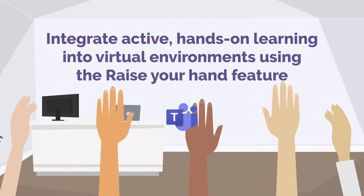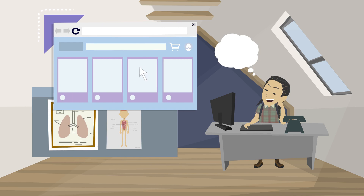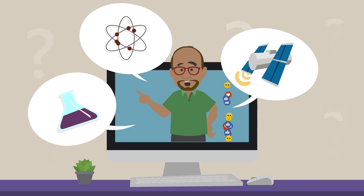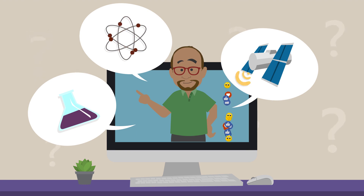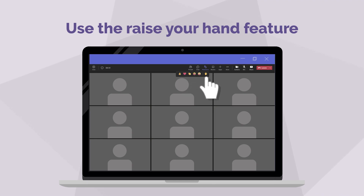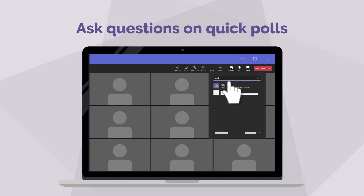Integrate active, hands-on learning into virtual environments using the raise your hand feature. Remember that students can hold up their work to the camera. Teachers should use engagement strategies like asking students to give a thumbs up or thumbs down sign, or use a computer emoji to show if they do or do not understand something. In Microsoft Teams, students can be seen and heard without disrupting other students using the raise your hand feature. Once the student gets the teacher's attention, he or she may speak accordingly.